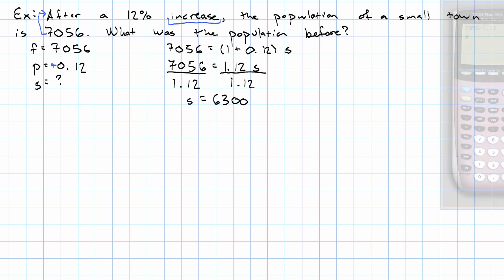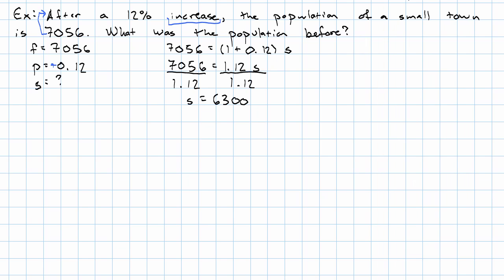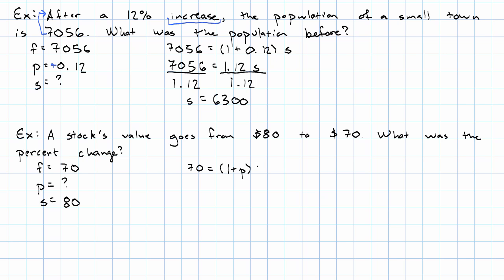Finally, we might be asked a question like this. Suppose that a stock's value goes from $80 to $70. What was the percent change? In this problem, the percent change is what we're looking for. The value goes from $80 to $70. So the starting price was $80 and the final price was $70. We'll say $70 equals 1 plus P times $80.